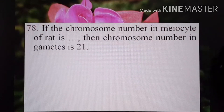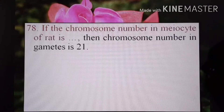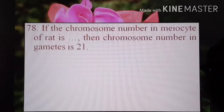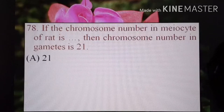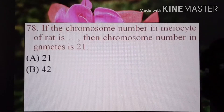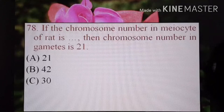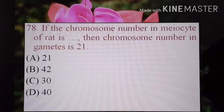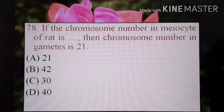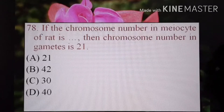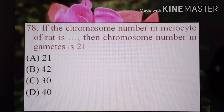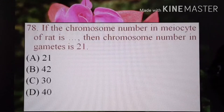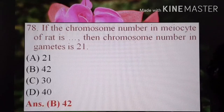Next, if the chromosome number in the meiocyte of rat is blank, and the chromosome number in gametes is 21 — A) 21, B) 42, C) 30, or D) 40. Here, the number of chromosomes in gametes is given, so in the meiocyte of rat the number will be double. That is 21 times 2. The correct option is B) 42.